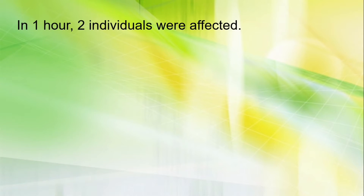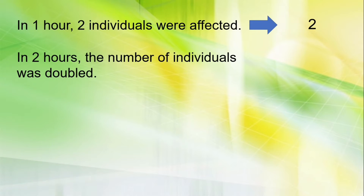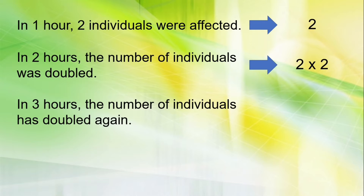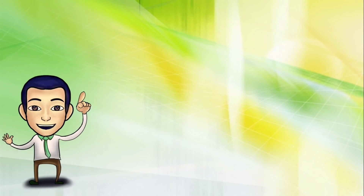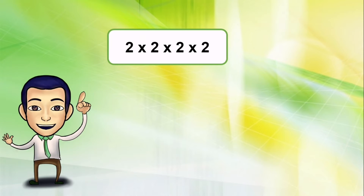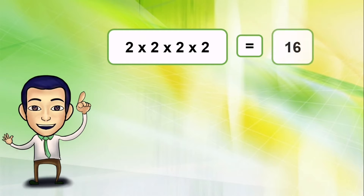In one hour, two individuals were affected, so it's two. In two hours, the number of individuals was doubled — it became two times two. In three hours, the number of individuals has doubled again, so it's two times two times two. In four hours, the number of individuals has also doubled, so it's two times two times two times two.